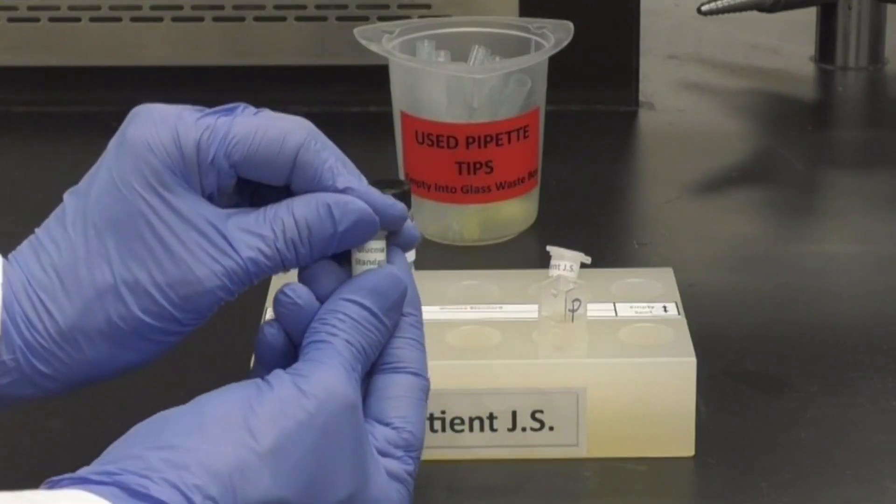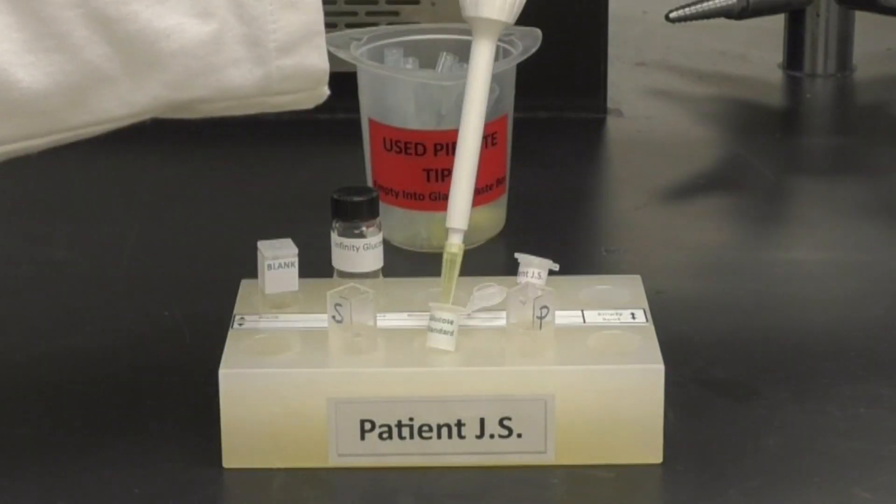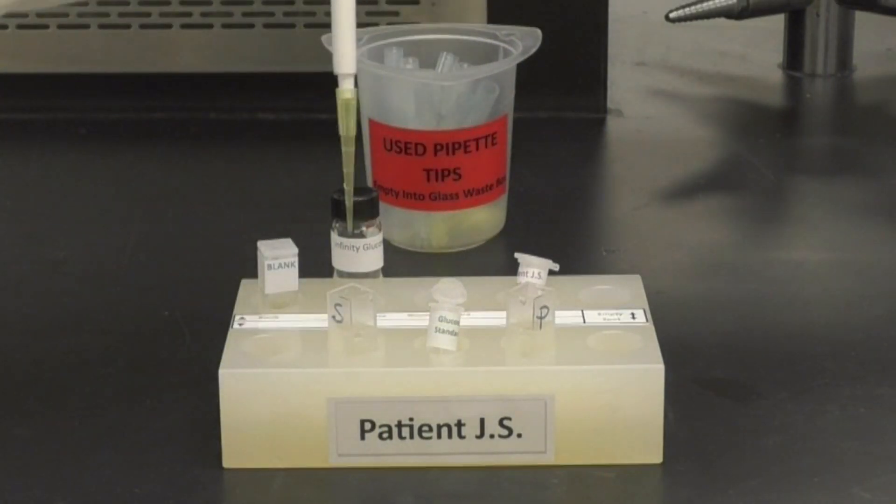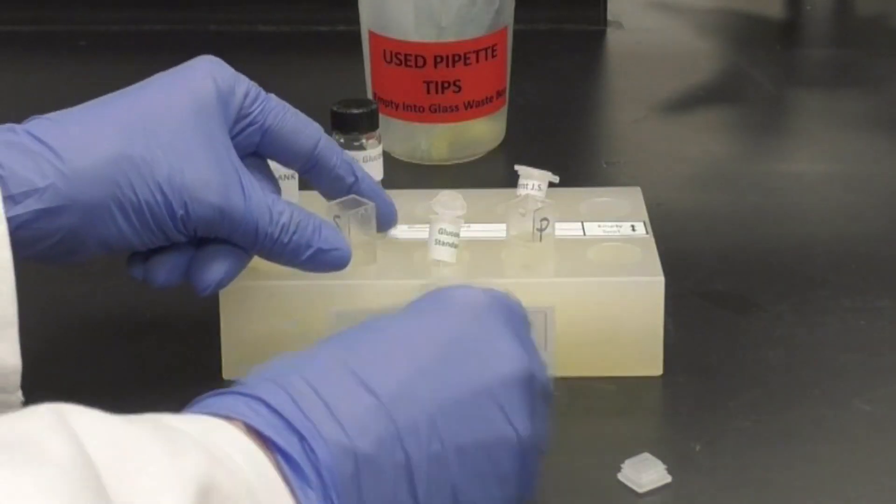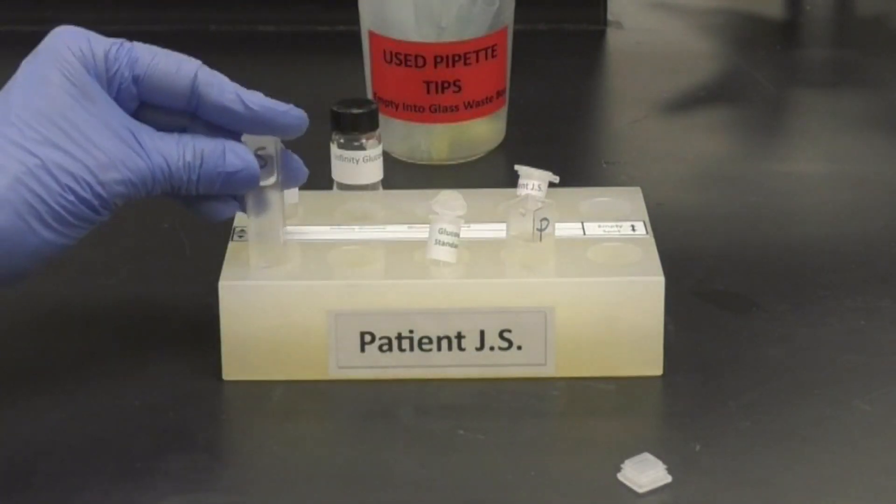Prepare the standard by micropipetting 20 microliters of the glucose standard into the cuvette labeled S. Cap, rotate to mix, and let it sit at room temperature for 5 minutes.